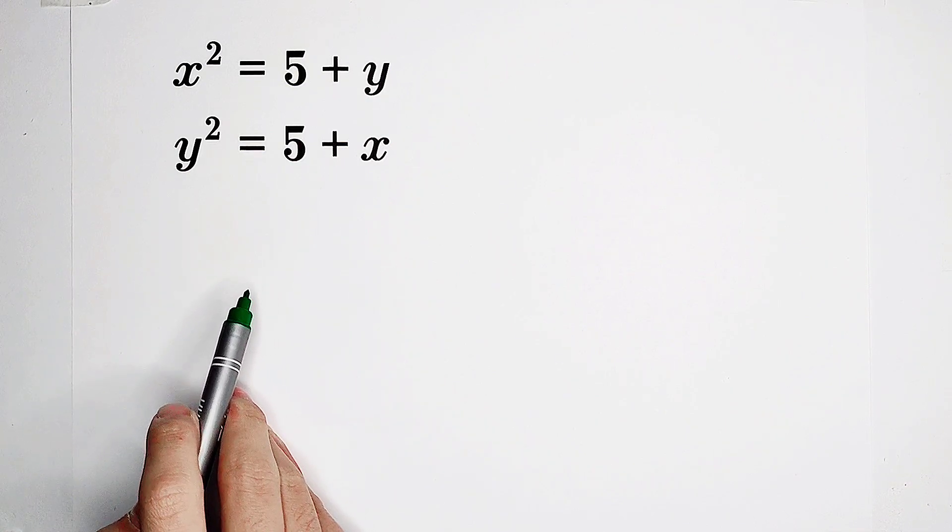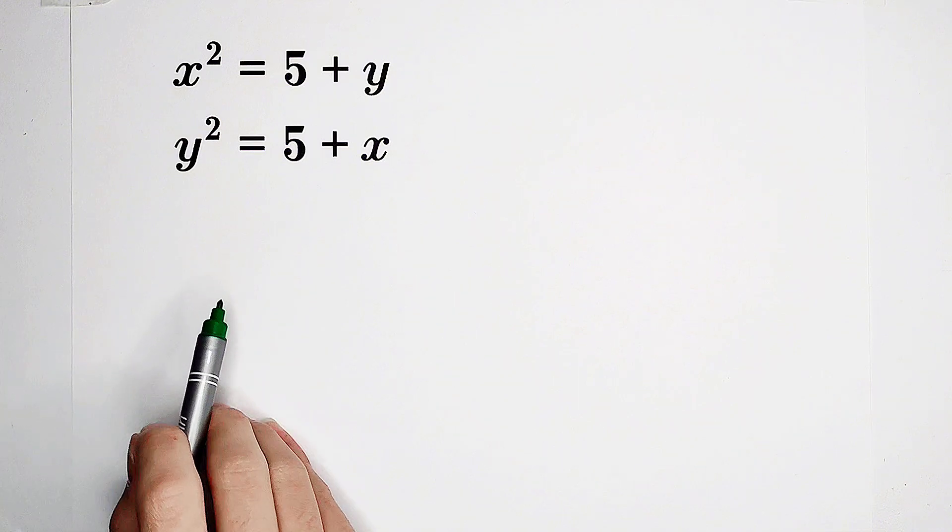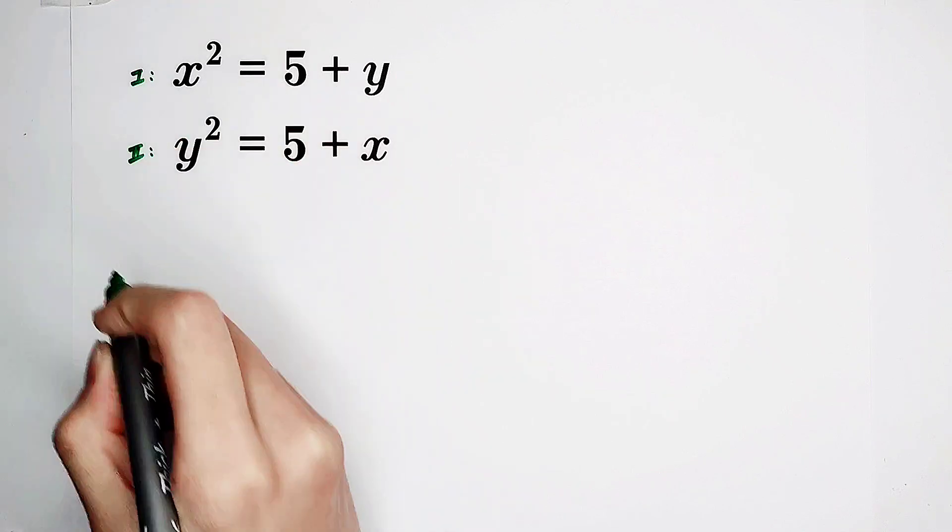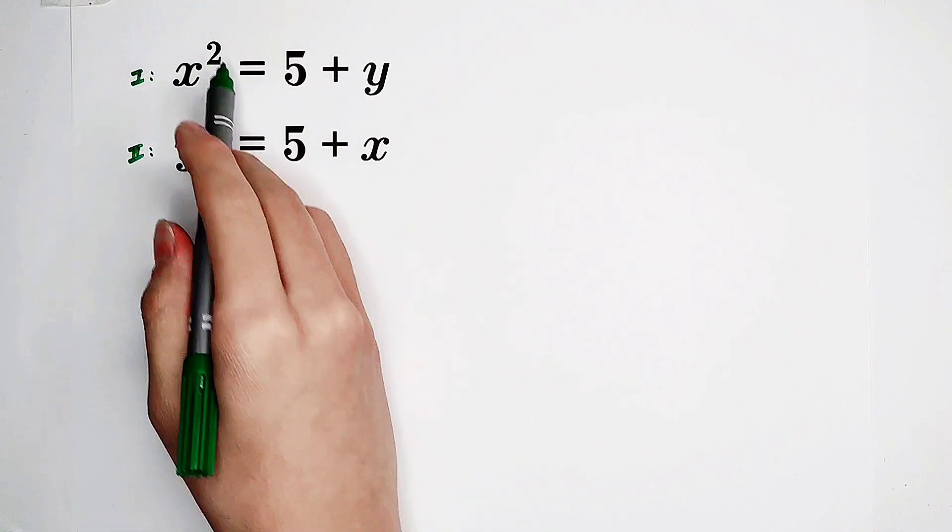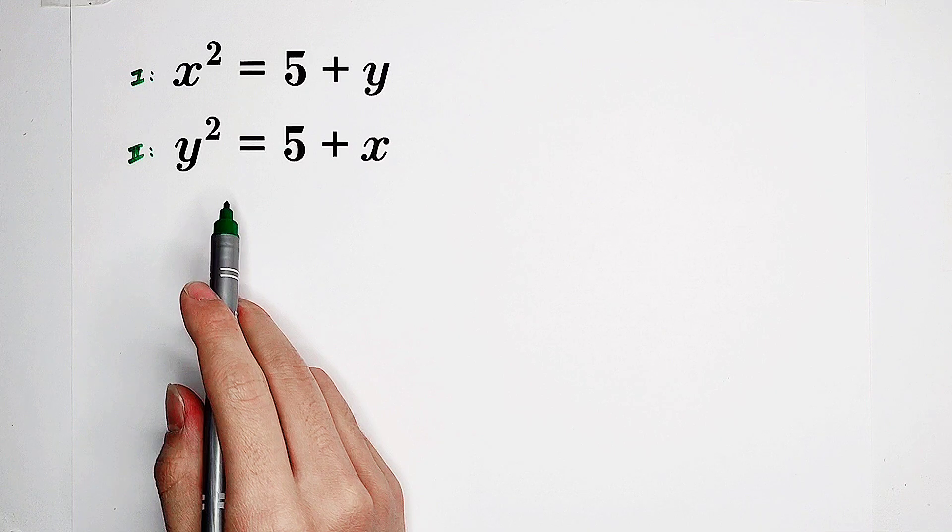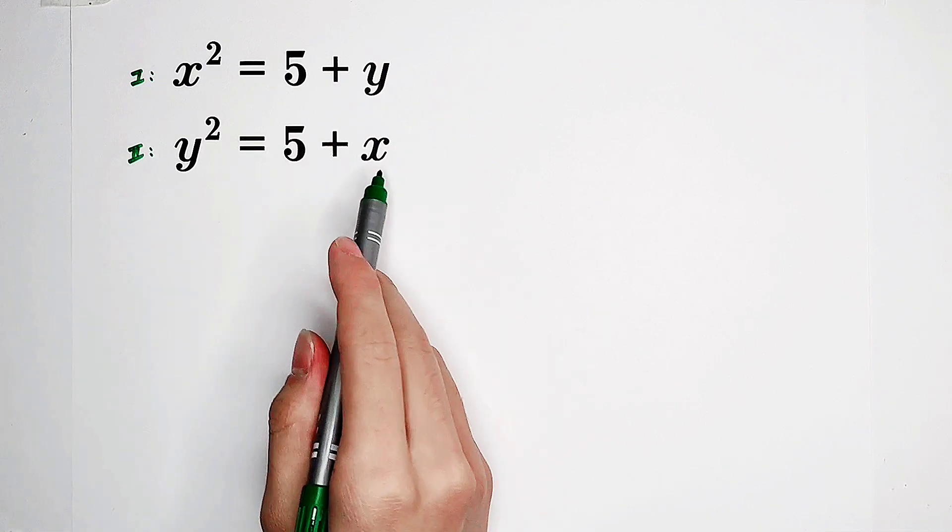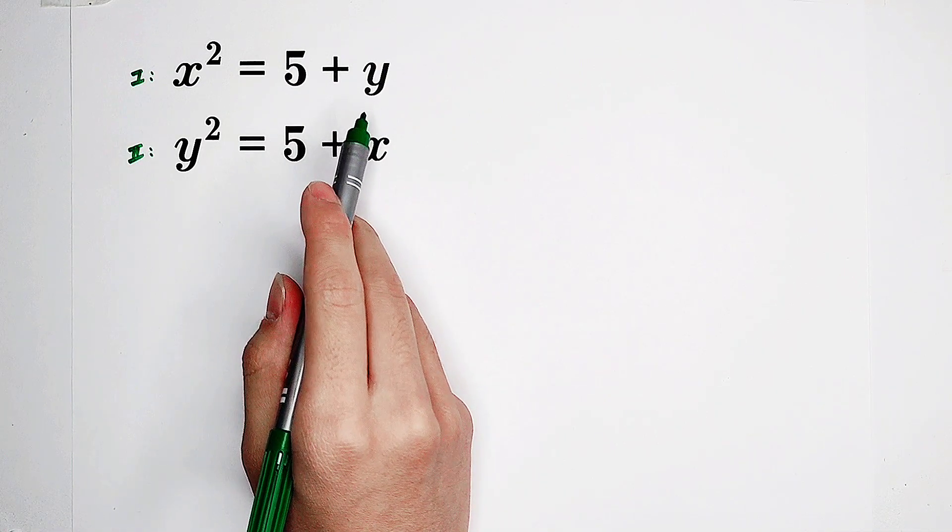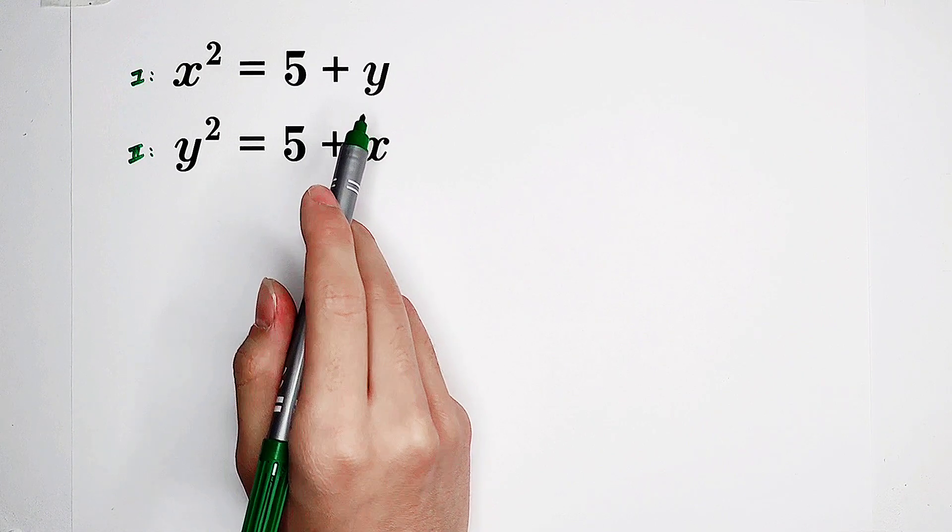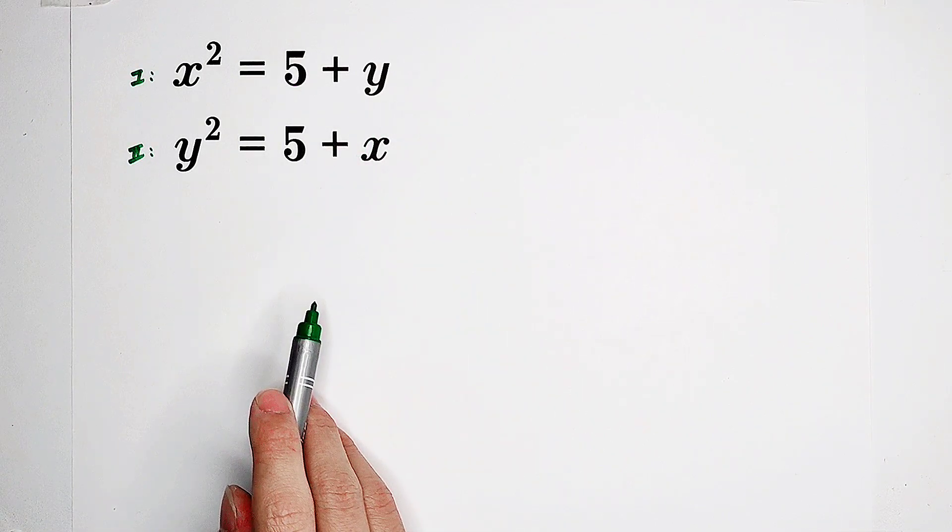What shall we do at the very first step? Now, we notice that squares appear on the left-hand side, and on the right-hand side we have x and y. So if we meet squares, we have to think of the factorization of a difference of two squares.